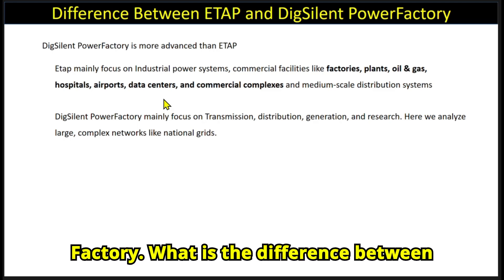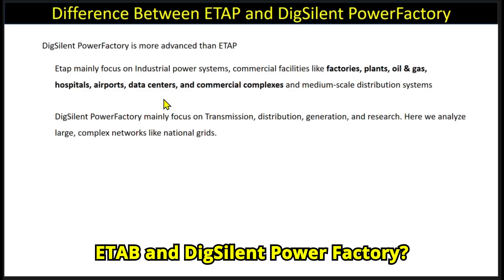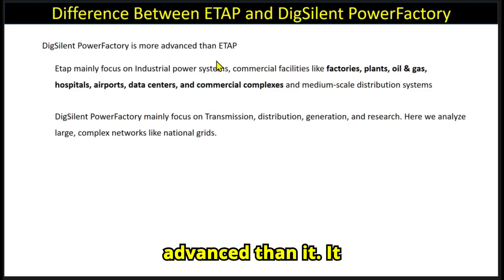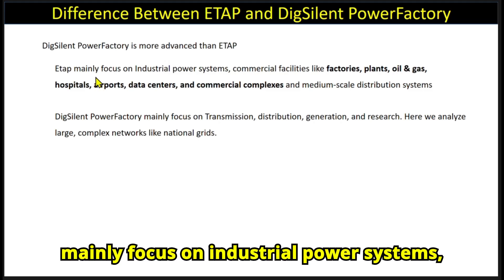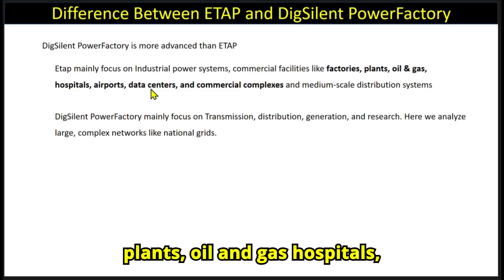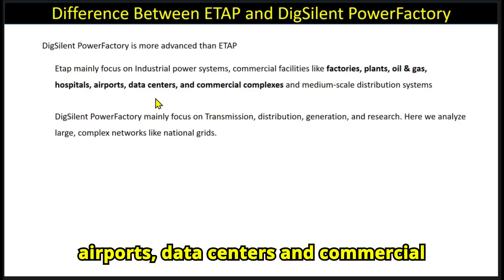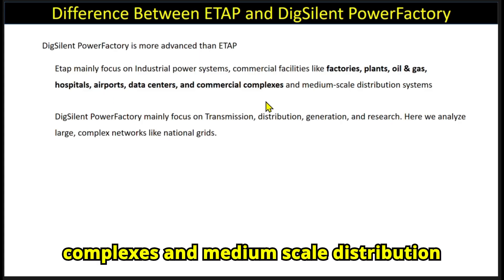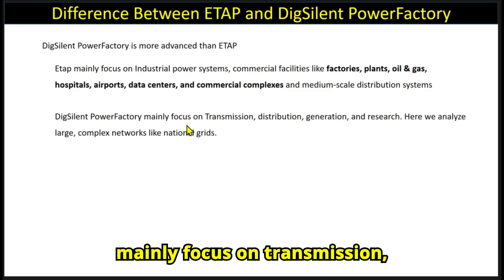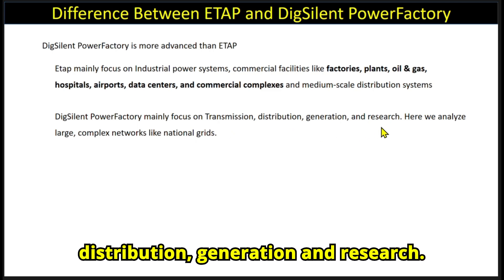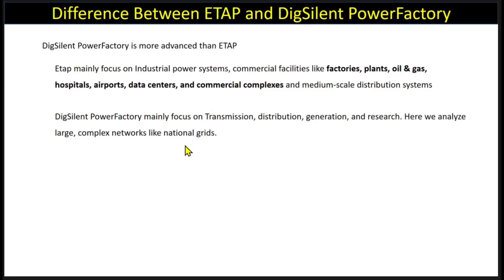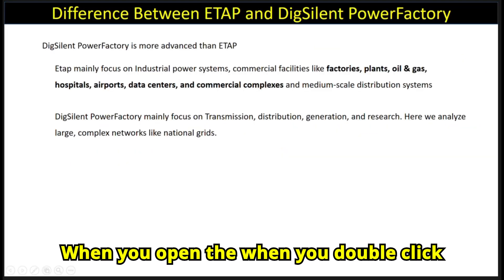What is the difference between ETAB and DIgSILENT PowerFactory? DIgSILENT PowerFactory is more advanced than ETAB. ETAB mainly focuses on industrial power systems and commercial facilities like factories, plants, oil and gas, hospitals, airports, data centers, commercial complexes, and medium-scale distribution systems. DIgSILENT PowerFactory mainly focuses on transmission, distribution, generation, and research, and is used to analyze large complex networks like national grids.